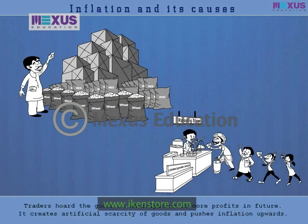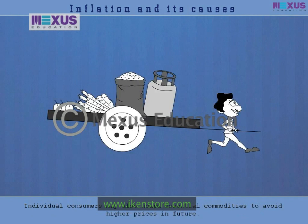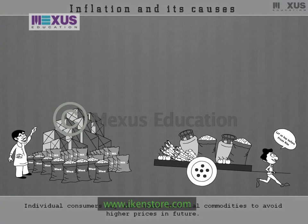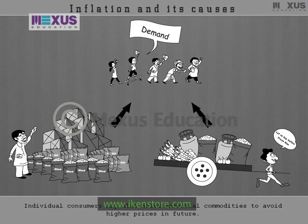Hoarding of goods: traders purposely hoard essential goods and do not sell them in the market to create a situation of artificial scarcity. Also, individual consumers may hoard essential commodities to avoid higher prices in future. Thus, hoarding of goods by sellers and consumers increases the intensity of demand for these goods, resulting in inflationary pressure.